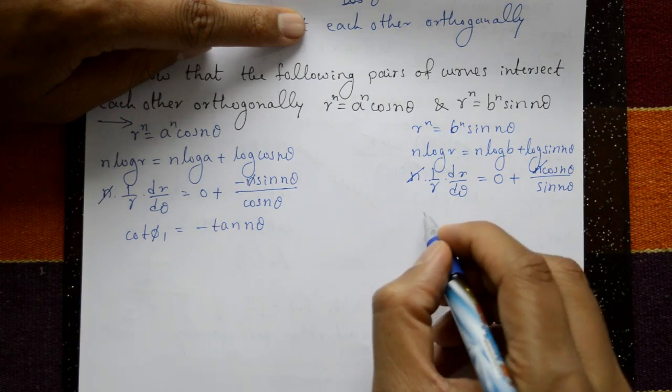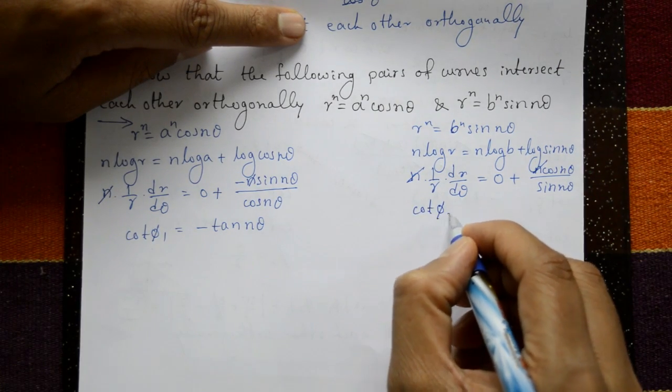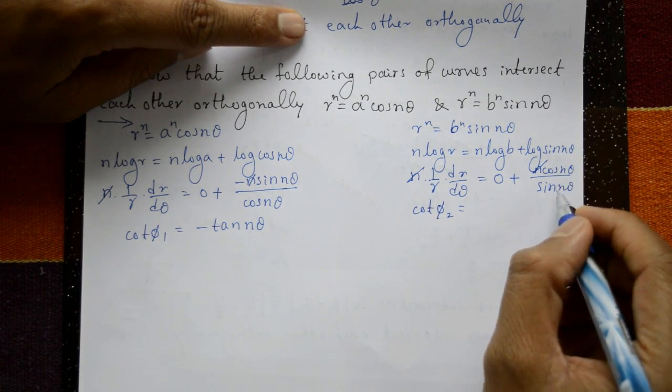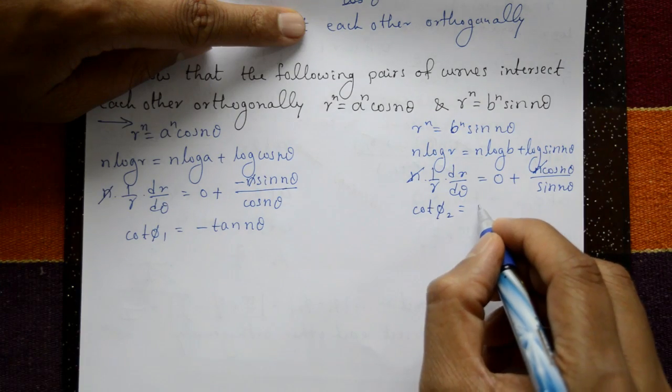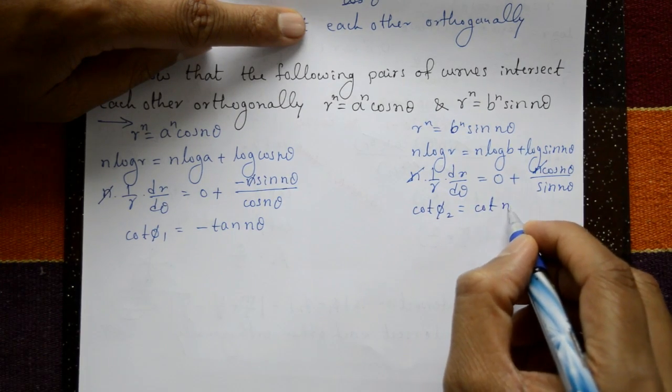Both sides cancel n, and this gives cot(φ₂) = cot(nθ), so φ₂ = nθ.